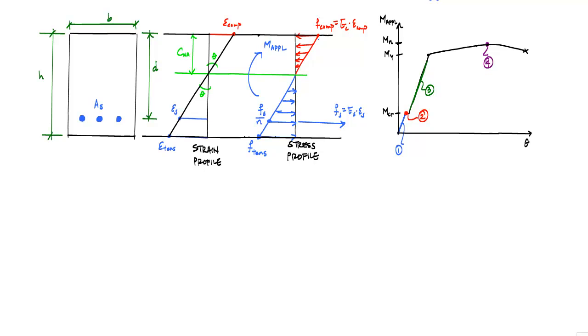Now let's look at stage three, which is cracked elastic section behavior. This is probably the condition of most reinforced concrete structures in operation right now. They might be cracked in tension. You might not even be able to see the cracks. All the materials are still in their linear elastic region.